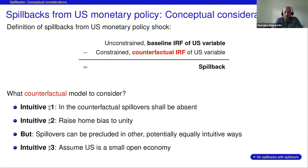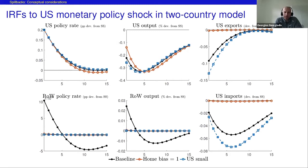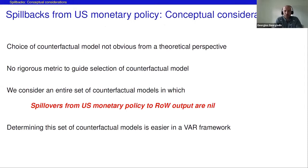However, raising home bias to unity is not the only way to preclude spillovers. Another option is to assume the U.S. is a small open economy, which actually implies U.S. output responds more strongly — suggesting spillbacks are dampening rather than amplifying. From a theoretical perspective, it's not obvious which counterfactual to choose. There's no rigorous metric to guide selection, so we instead consider an entire set of counterfactual models characterized by spillovers from U.S. monetary policy to rest-of-world output being nil.